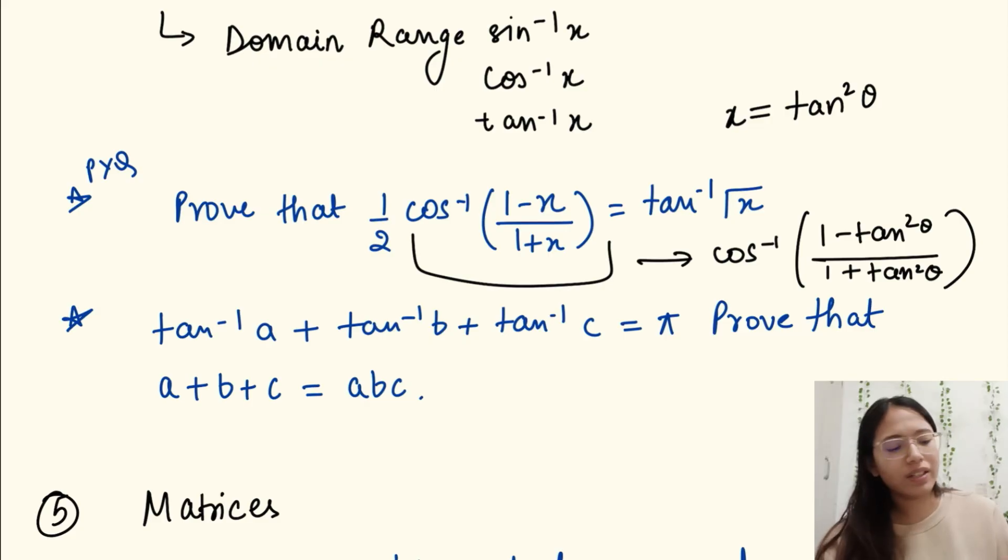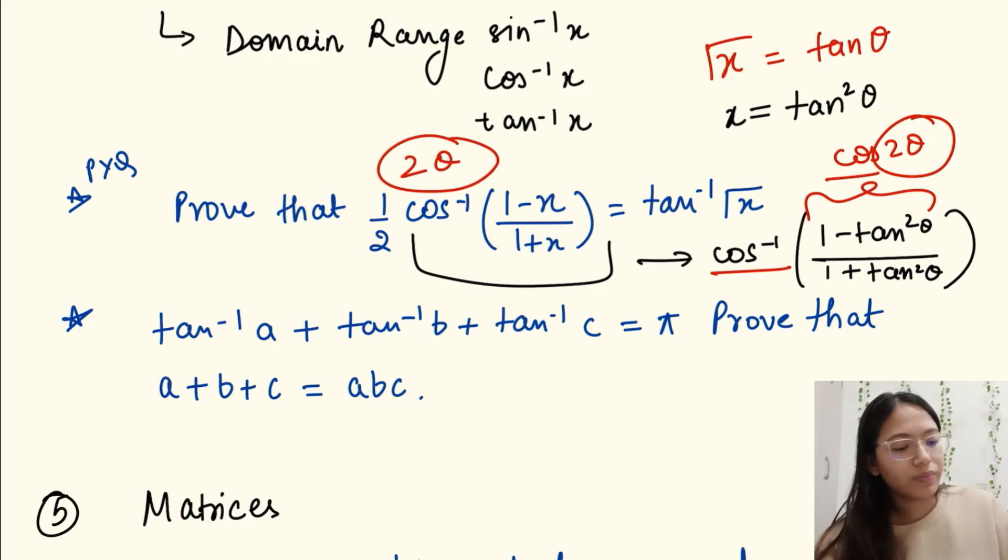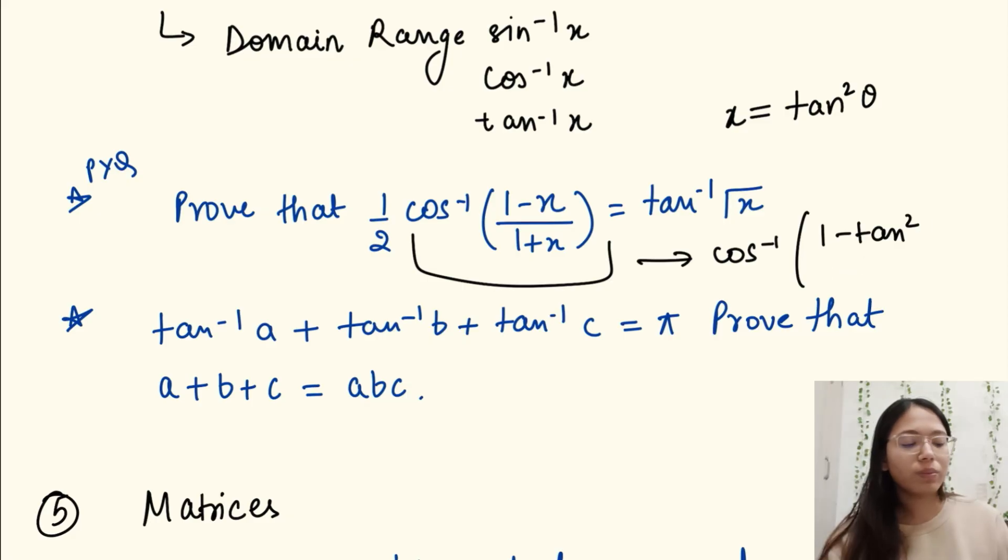Yes, so cos inverse cos 2 theta will be 2 theta. Then we have to substitute the value of theta. So this is root of x is equal to tan theta. Here theta will be tan inverse root x. 2 into tan inverse root x, and there is this half in front of it, so 2 and 2 gets cancelled and we get tan inverse x. Sorry for creating this mess. You might not be able to solve this question if you don't know what value you have to substitute.